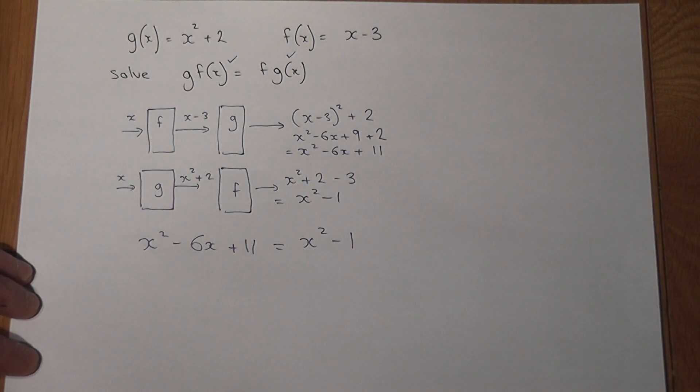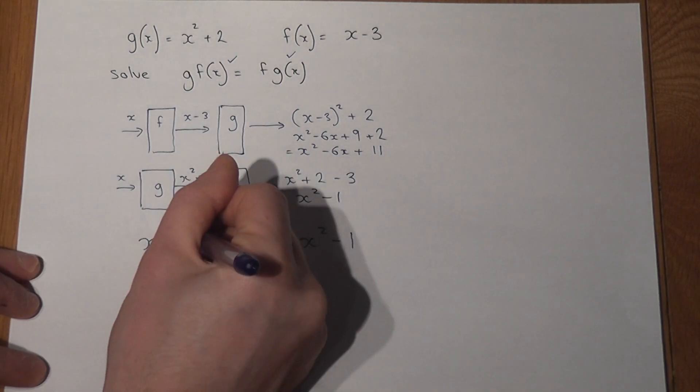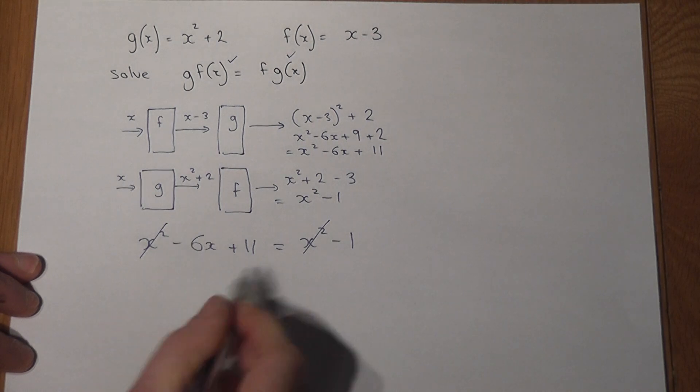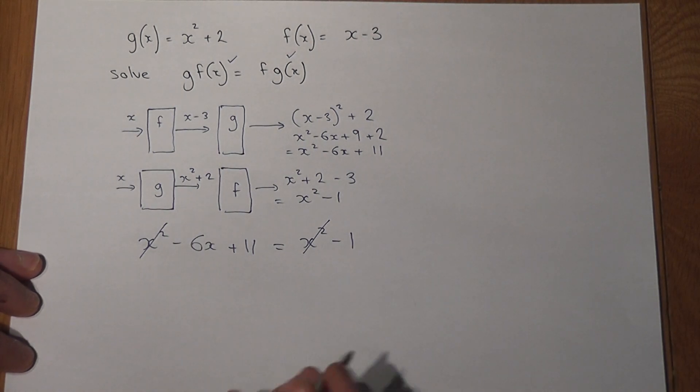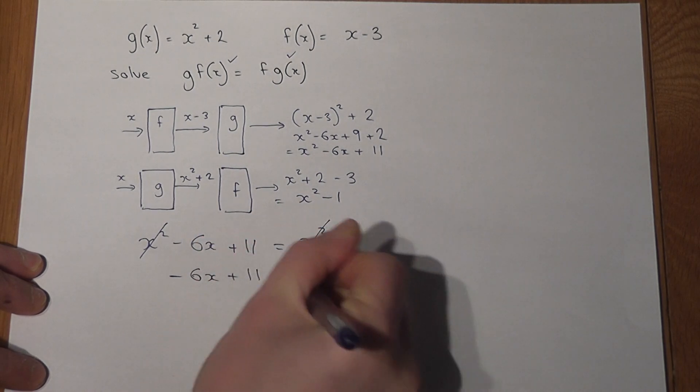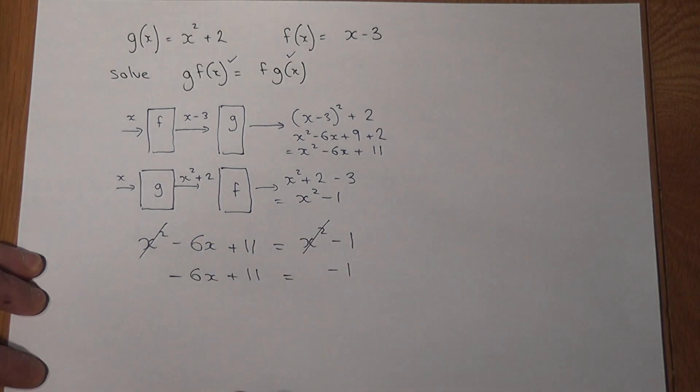Now to solve the equation we can actually just cancel off the x squared terms because they're on both the left hand side and the right hand side. So the equation becomes minus 6x plus 11 equal to minus 1.